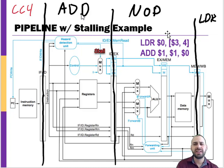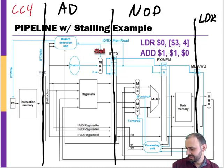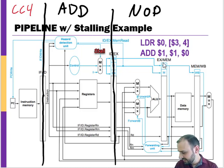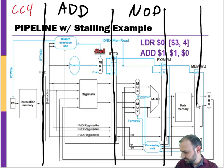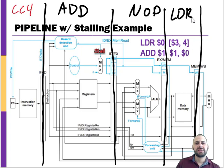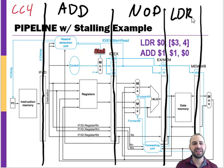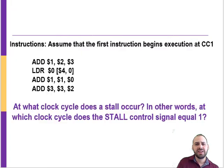At clock cycle 4, the load is in stage 4, then we have the no-op, then the ADD instruction in decode. As things proceed, we're able to forward the value back at the next clock cycle, just like in the forwarding example. The data hazard has been removed.